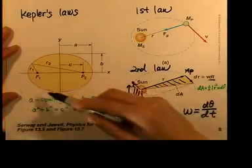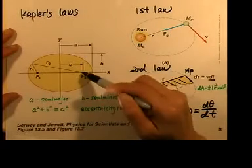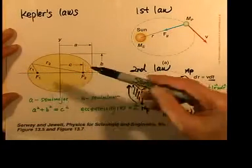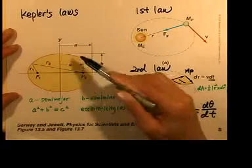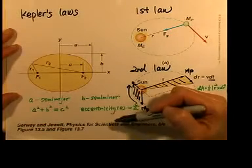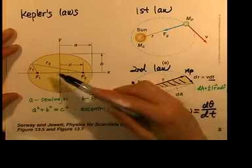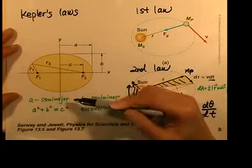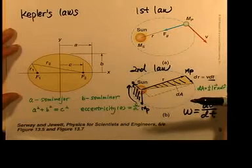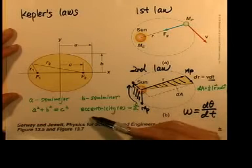Let's look at this elliptical orbit. Any elliptical orbit has two foci, f1 and f2. The semi-major axis is defined as little a, and the semi-minor axis as little b. The relationship between a, b, and c is a² + b² = c², where c is the distance from one focus to the center of the orbit. We define c over a as the eccentricity.